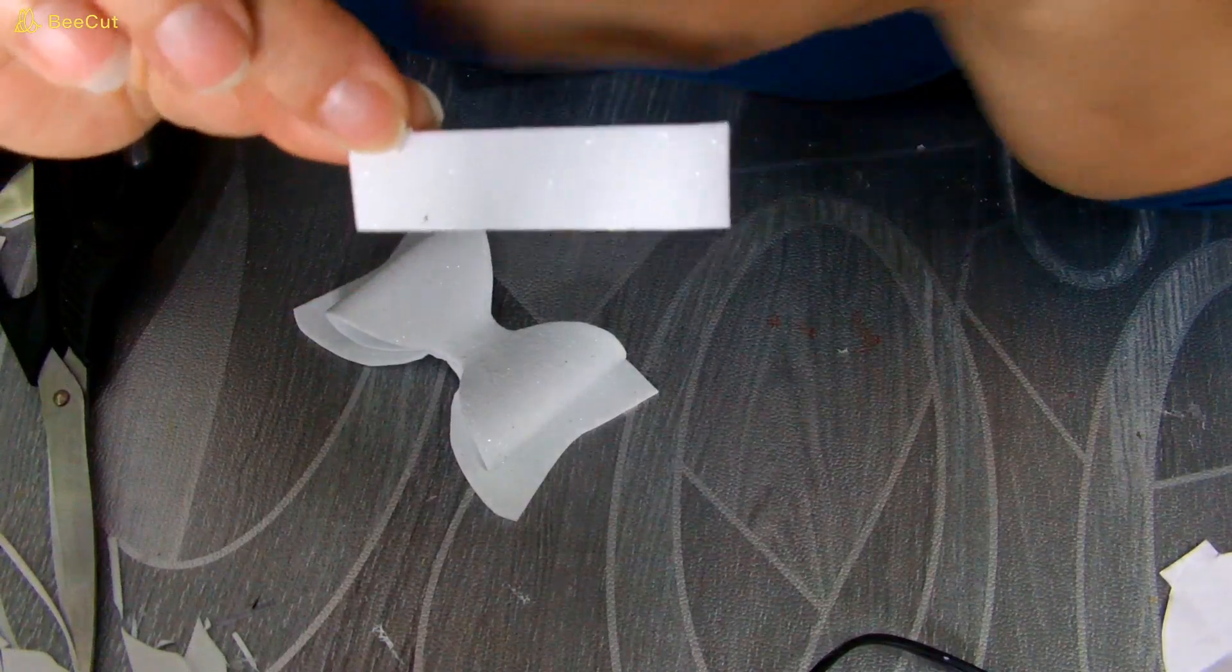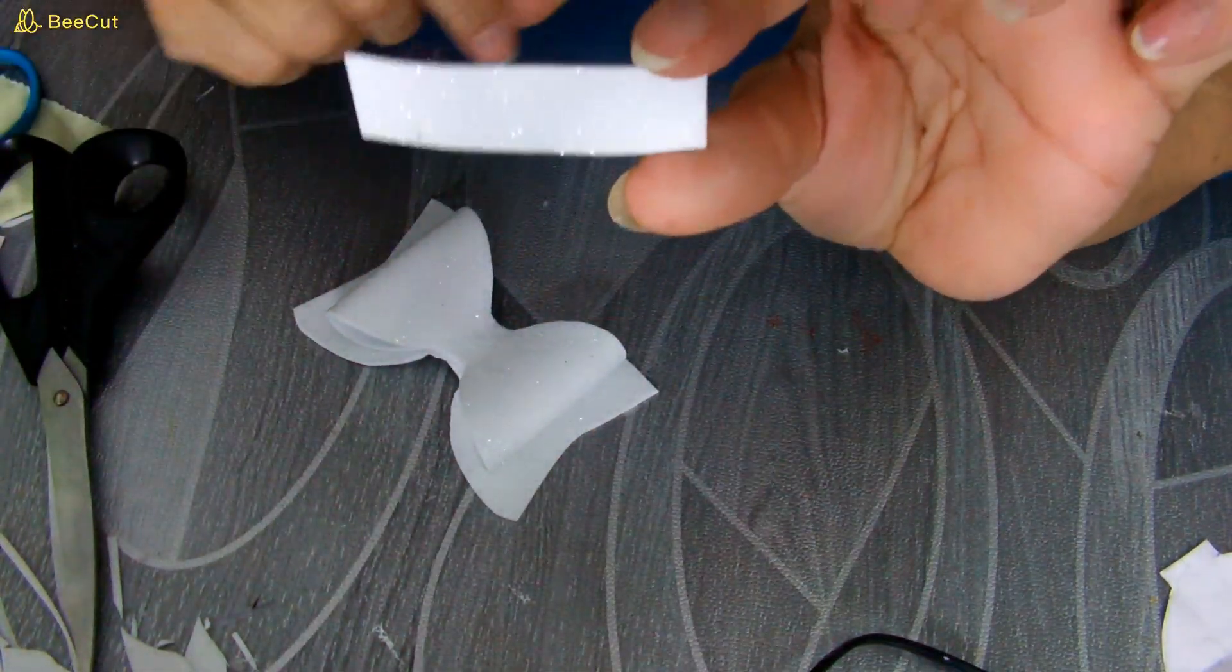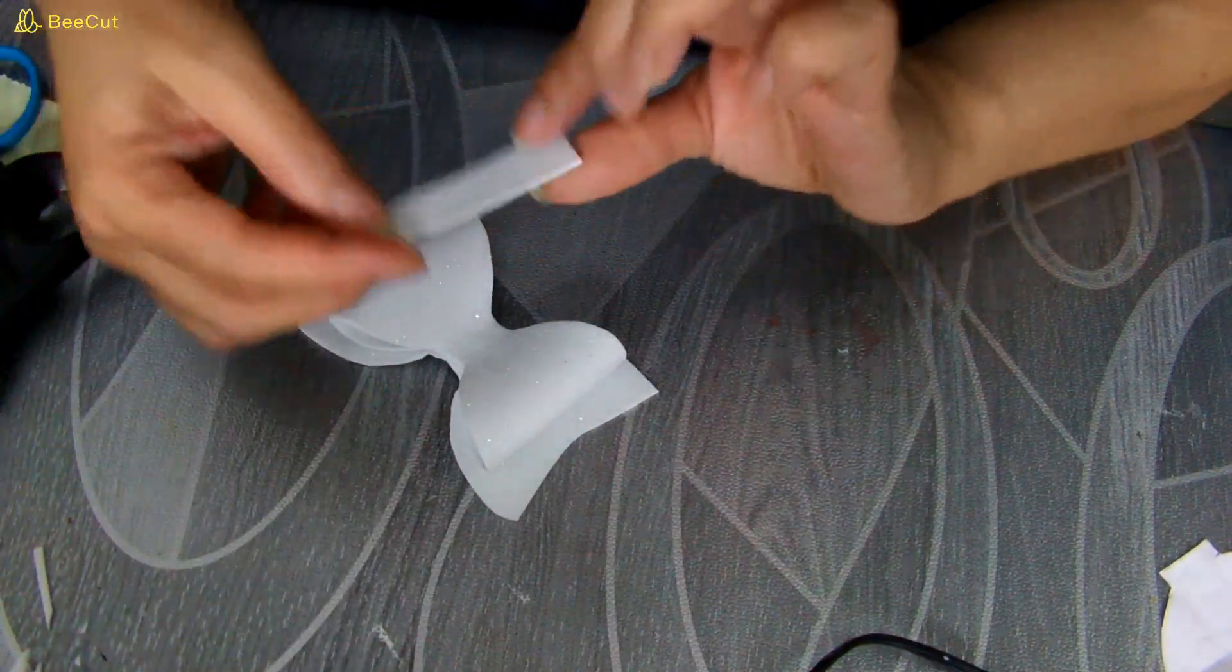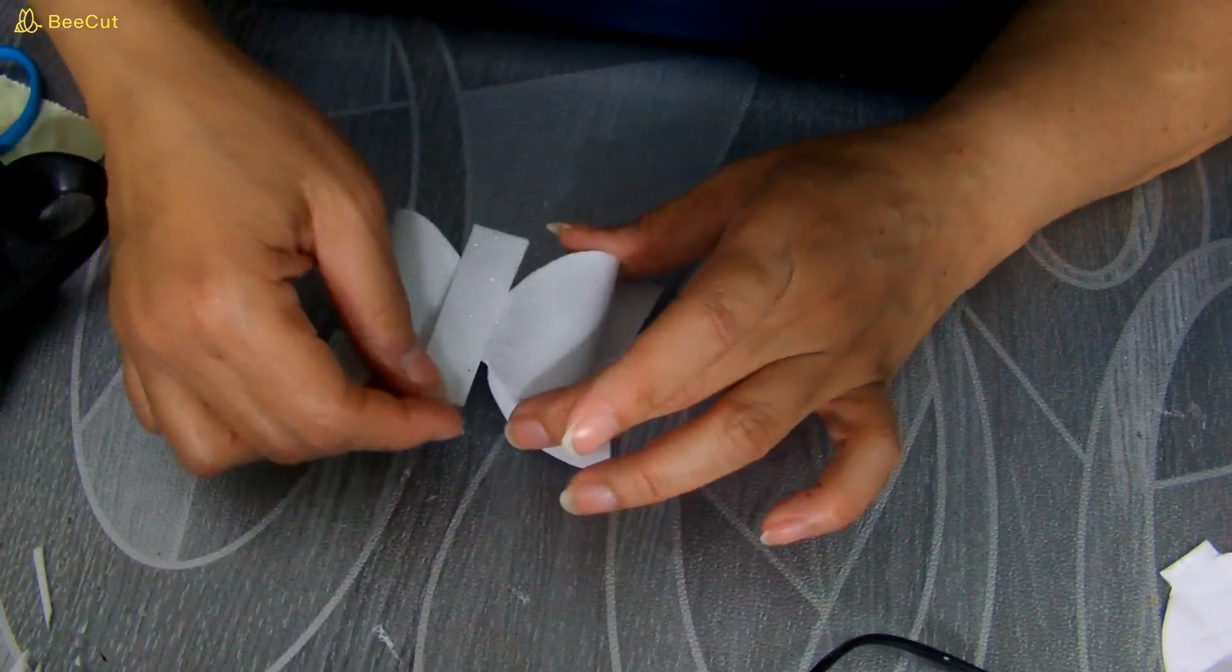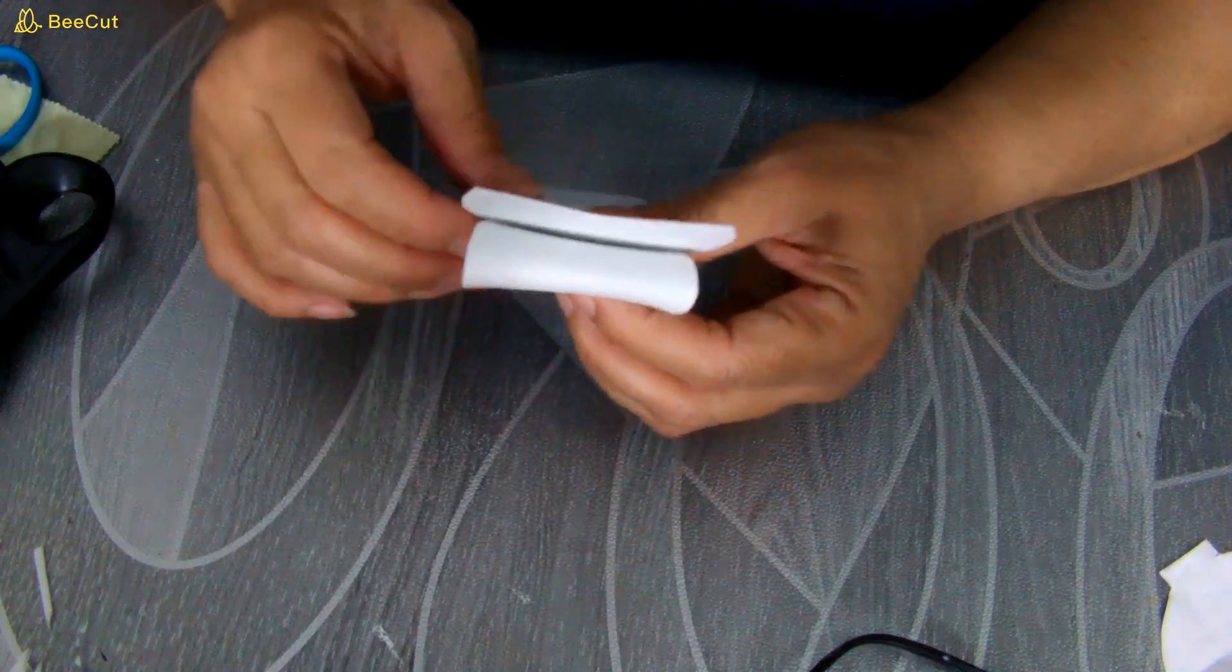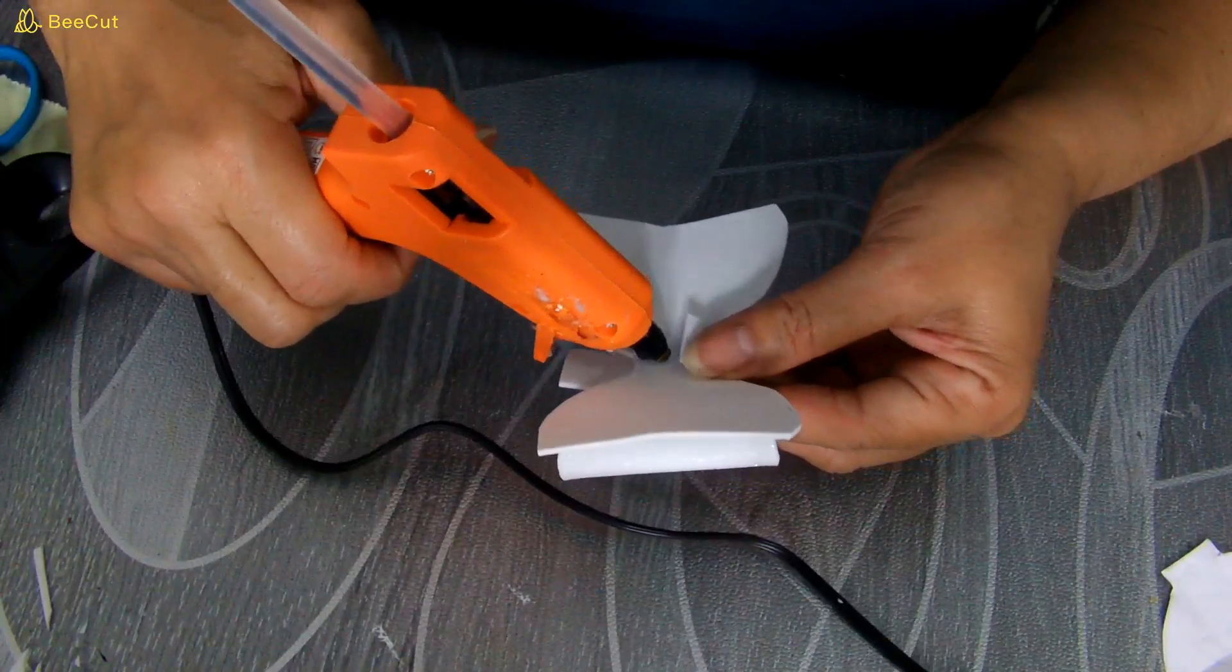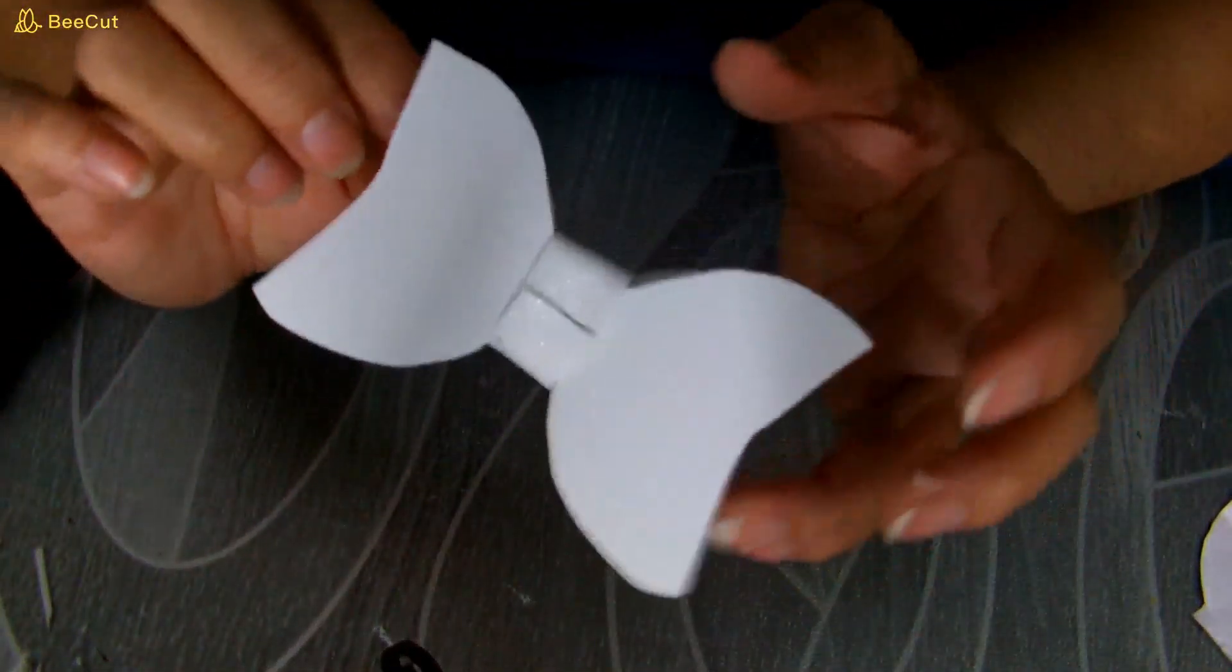Y corté así un pedacito de foami o de la tela que usted tenga para ponerle aquí. Aquí simplemente busqué más o menos la medida así al ojo y lo fui cortando. Entonces esto lo voy a pegar aquí.